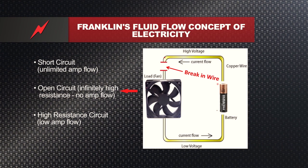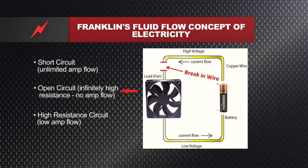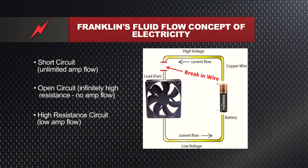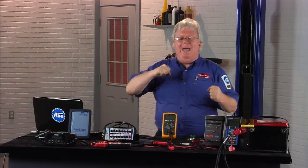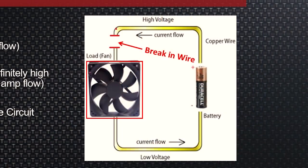The next scenario would be a break in the wire, or an open circuit. There's infinite resistance. As the resistance went up — remember the Ohm's Law teeter-totter — the amount of current goes down. In fact, it goes down to the point where there's no current flow. So there's a complete open circuit. That's the second type. And then the third type is where we have high resistance — we have a complete circuit, but there's a high source of resistance in it, meaning the electrons are going to have a really hard path to go through to get to that fan.